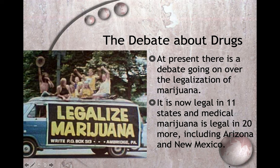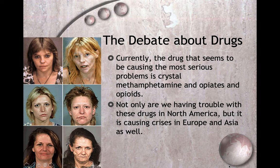There are about 11 states with full legalization, and 20 states have legal medical marijuana. Both New Mexico and Arizona have legal medical marijuana. Currently the drugs causing the most serious problems are crystal meth and opiates/opioids. Opiates are drugs that come from the opium poppy; opioids are synthetic opiates — oxycontin and hydrocodone are both opioids. Not only are we having trouble with these drugs in North America, but it's causing a crisis in Europe and Asia as well.